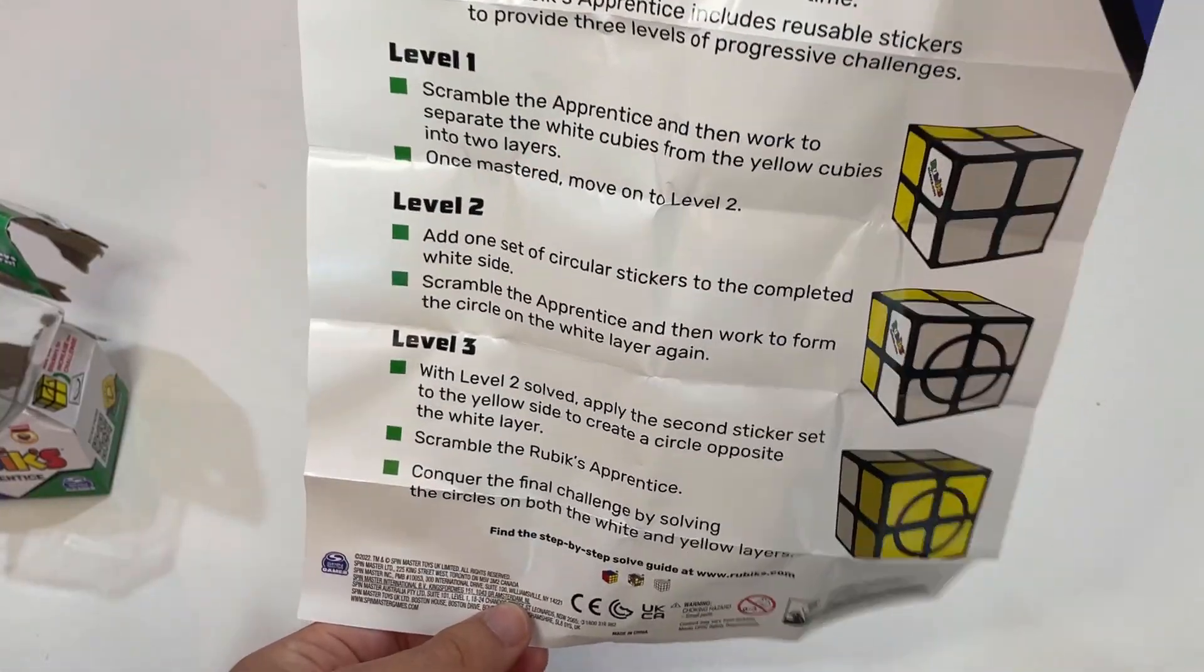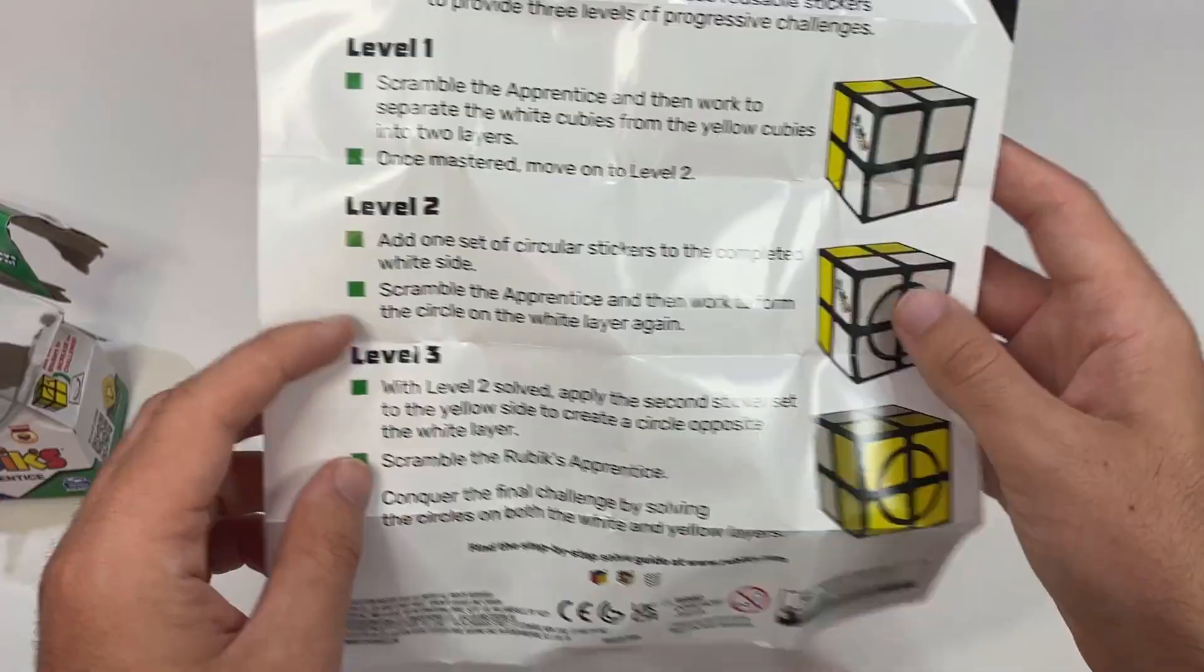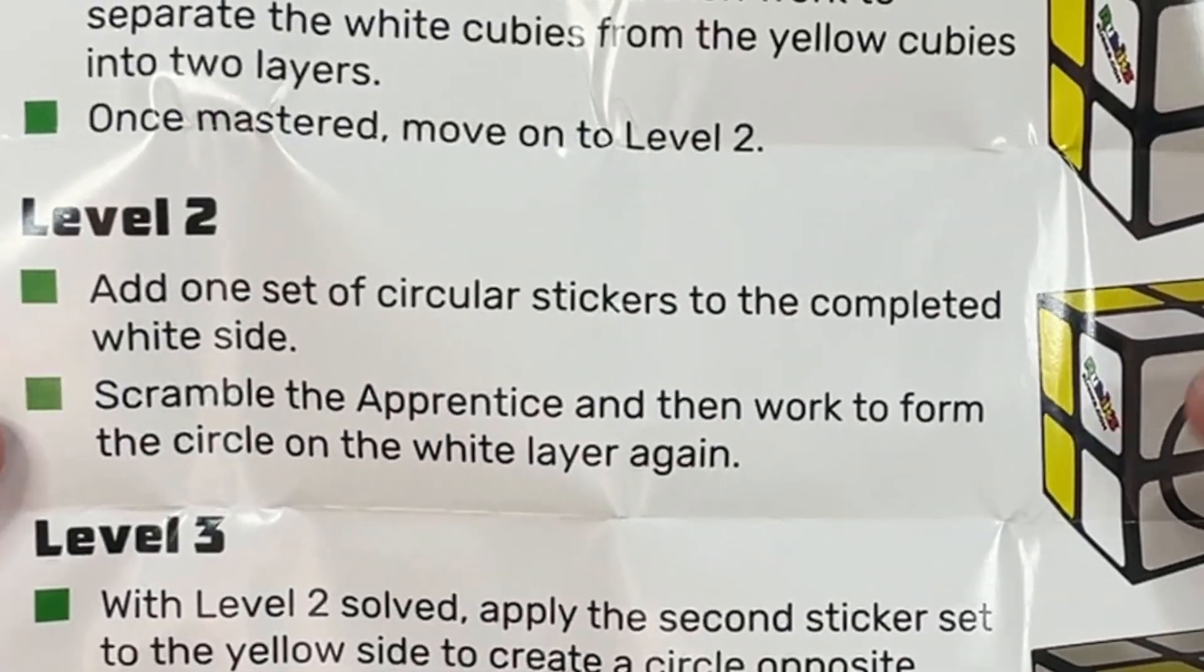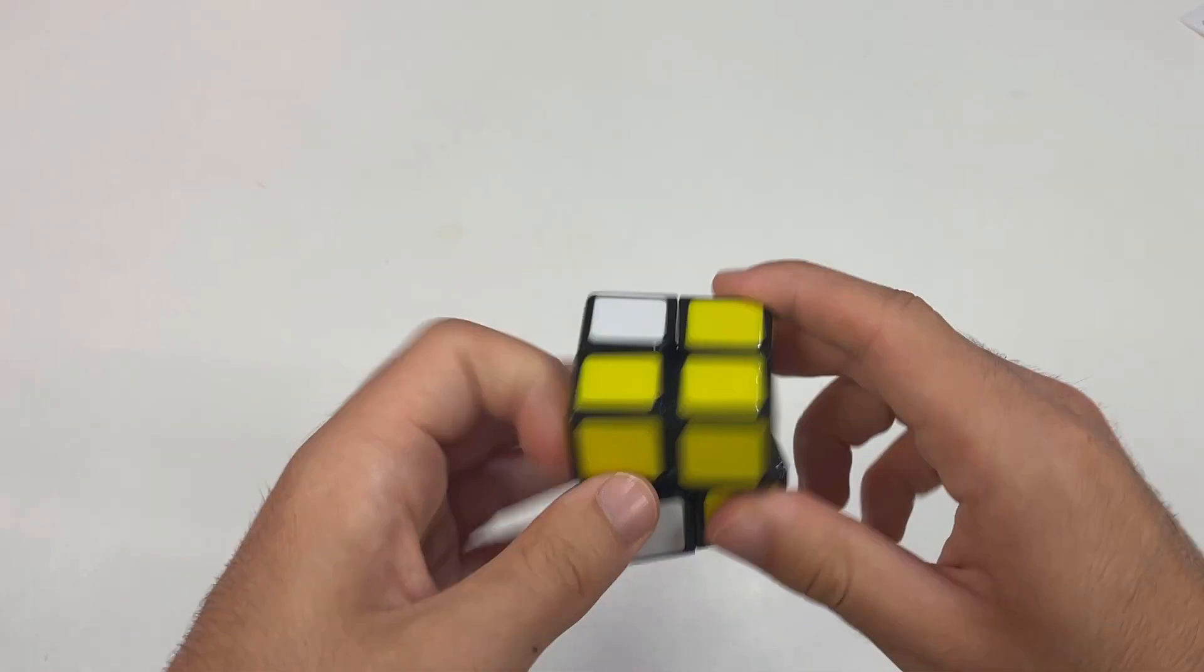There's level one where you have to solve both layers but orientation doesn't matter. Level two where orientation does matter because of the circle here. And level three where orientation matters on both layers. I guess it's time to scramble this thing up.